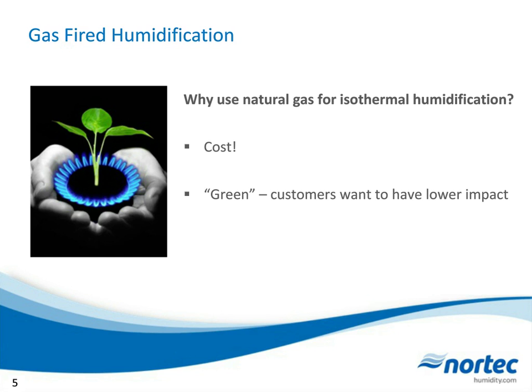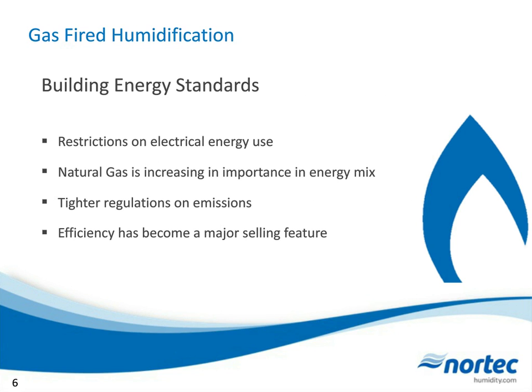More reasons to use gas: there are restrictions on building energy use, including building electricity demand. What we're seeing is restrictions on how many kilowatts a building can demand per month. If you're using electric humidification, you might exceed your allowed demand, whereas natural gas humidifiers obviously have less electrical demand.